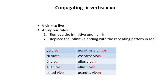Now we'll switch to IR verbs. We'll use the example vivir. Vivir means to live. Once again, let's apply our rules. First, we remove the infinitive ending IR, and then we replace the infinitive ending with the patterns shown below in red, starting at the upper left, first person singular.